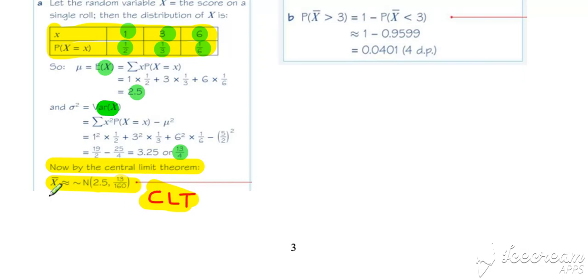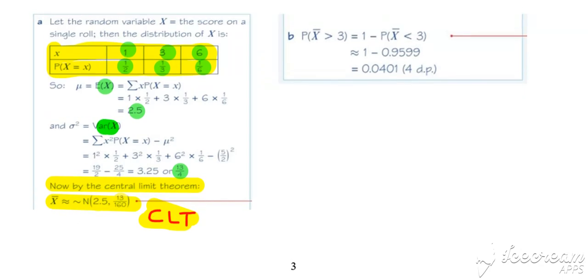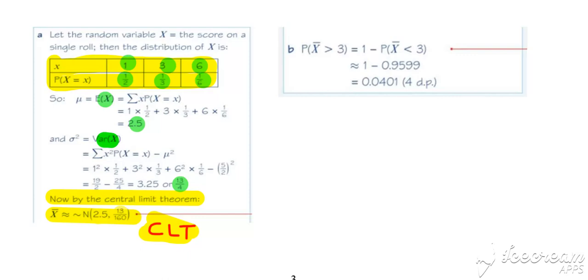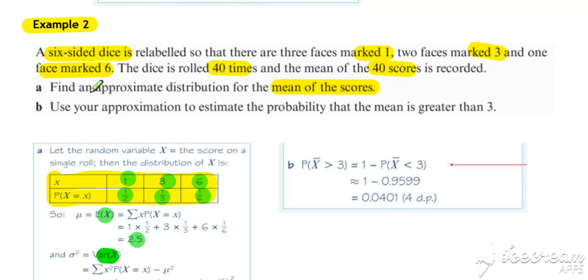That then enables us to go back and answer the next bit of the question. So use your approximation to estimate the probability that the mean is greater than 3.